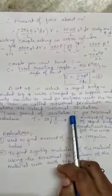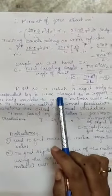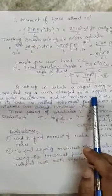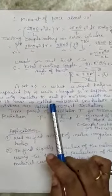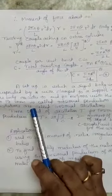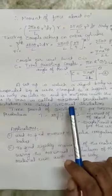Next, what is the time period for torsional oscillations? A setup in which the rigid body is suspended by a wire and clamped to a support, and the body executes to and fro motion in which the wire rotates at its own axis - this is called a torsional pendulum, and the oscillations are called torsional oscillations.